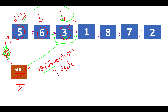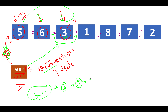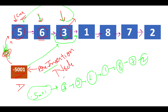The node to insert's next points to the node that was after the pre-insertion node initially. We also update the current node's next to point to 1 so that no loop is created. After these updates, the linked list looks like: -5001, 3, 5, 6, 1, 8, 7, 2.